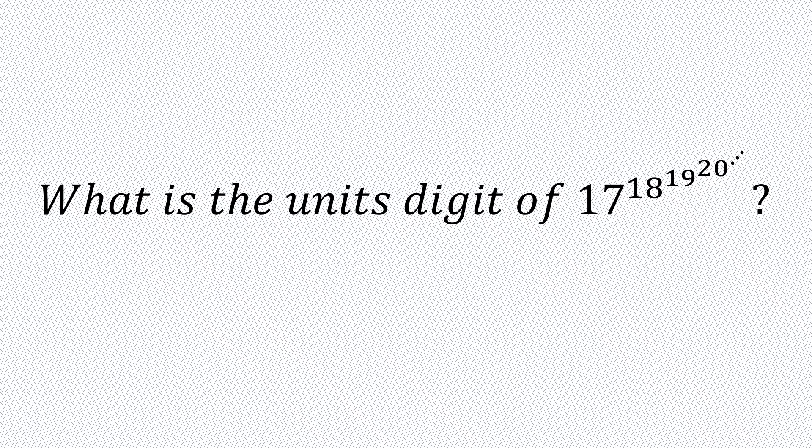Hello and welcome to the 340 Club. In this video we'll be solving this question: what is the unit digit of 17 to the power 18 to the power 19 to the power 20 and so on? I want to find the unit digit of this number when it's written and expanded in decimal form, not as an exponent. So let's begin — the question is asking us to find the unit digit of 17 to the power 18 to the power 19 to the power 20 to the power 21 to the power 22 and so on.